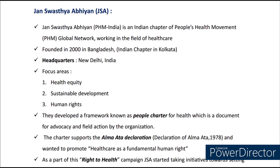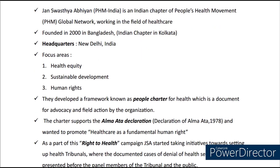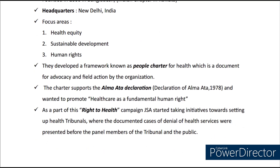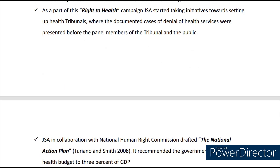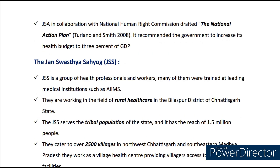Now coming to JSA, also called Jan Swasthya Abhiyan — it is the Indian chapter of the People's Health Movement, working in the field of healthcare and founded in 2000, with headquarters in New Delhi. The main focus areas of JSA are health equity, sustainable development and human rights. They developed a framework known as the People's Charter for Health, a document for advocacy and field action. The charter supports the Alma-Ata Declaration 1978 and promotes healthcare as a fundamental human right. As part of this Right to Health campaign, JSA set up health tribunals where documented cases of denial of health services were presented before panel members and the public. In collaboration with the National Human Rights Commission, JSA drafted the National Action Plan, recommending the government increase the health budget to 3% of GDP.